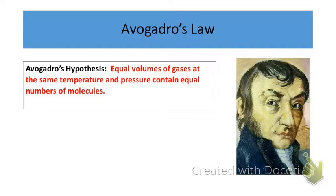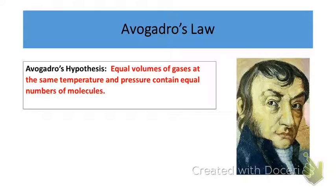The next law is Avogadro's Law. Avogadro is the scientist after whom Avogadro's number — 6.02 times 10 to the 23rd — is named. He was very interested in gases and first developed Avogadro's hypothesis, which states that equal volumes of gases at the same temperature and pressure contain equal numbers of molecules.